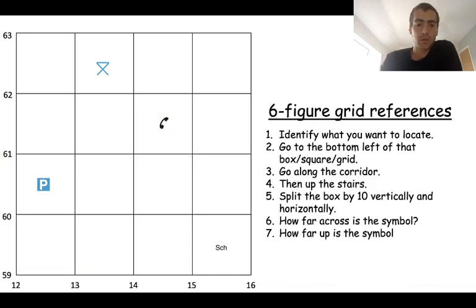So if we now want to do six figure grid references, we kind of follow the same pattern but we just add a few more steps on. So you can see from five we then need to split the box by ten vertically and horizontally. Then we need to figure out how far across is the symbol and how far up is the symbol.